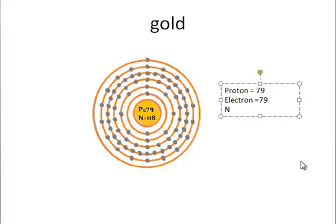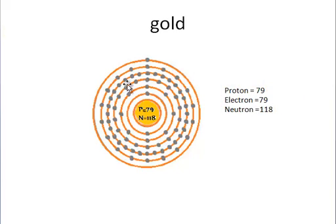The atomic number is 79 and the neutron number gives us approximately 108. So gold has a mass of about 188 to 189.